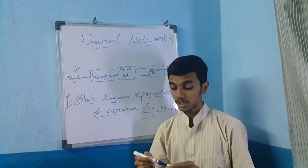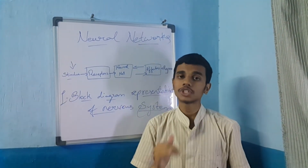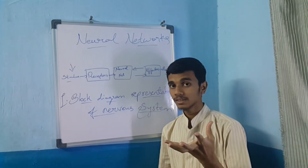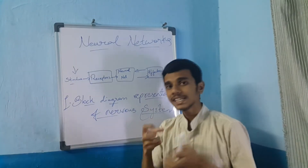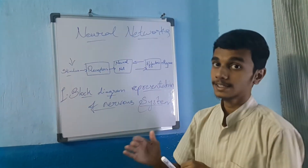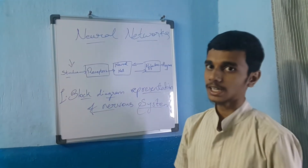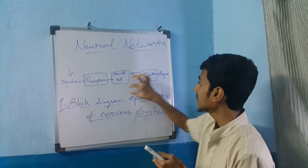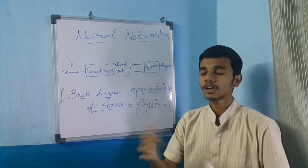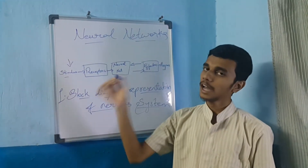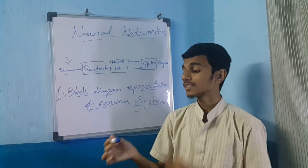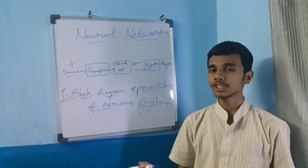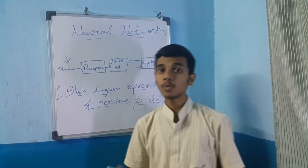Before going to stimulus, let's learn about stimuli. Stimuli are a type of signal sent to the receptors. Receptors, by the name itself, receive the signals. After that there is a neural net, which is an intermediate between the receptors and the effectors. The effectors convert the signals and perform a response. For example, I pick up a pen — I see it, take it up, hold it, and write. This is the block diagram representation of the nervous system.